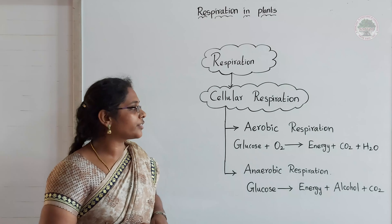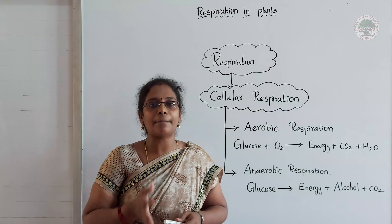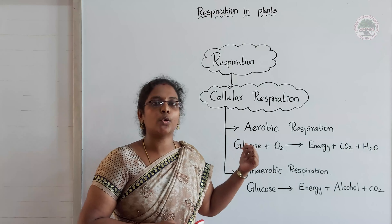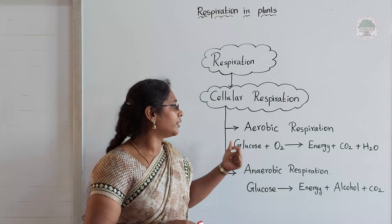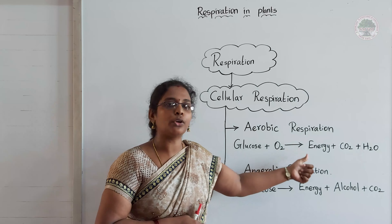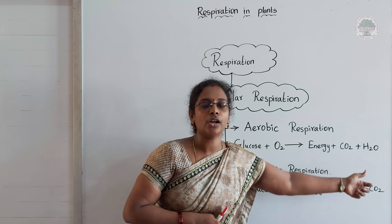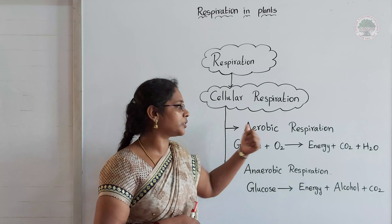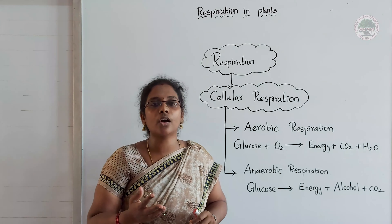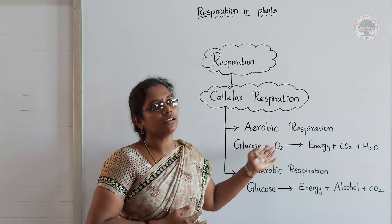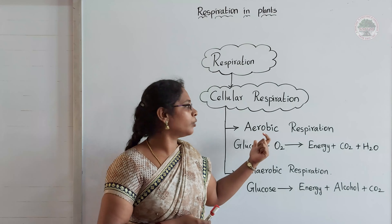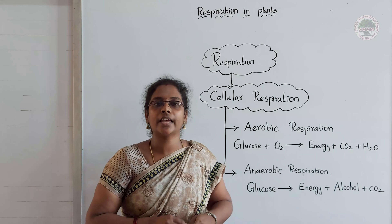In aerobic respiration, the process happens in the presence of oxygen — that's why it is called aerobic respiration. Here, glucose reacts with oxygen and produces energy, carbon dioxide, and water. During aerobic respiration, the glucose is totally utilized and a large amount of energy is released. Organisms that perform aerobic respiration are called aerobes.